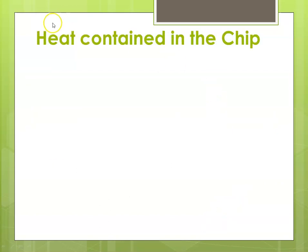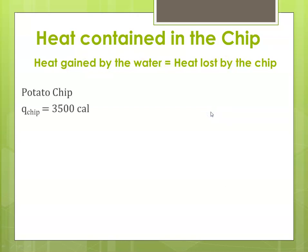So, now we can figure out what the heat was that was contained in the chip. So, the heat that was gained by the water is the same heat that was lost or released by our chip. So, for the chip, we had the Q that it released when it burned was 3,500 calories. The initial mass was 11.5 grams. The final mass was 2.5 grams. That means our change in mass was 11.5 minus 2.5, which is 9 grams.